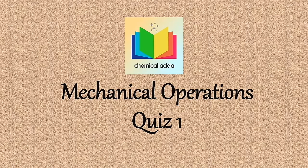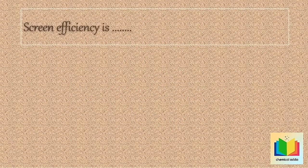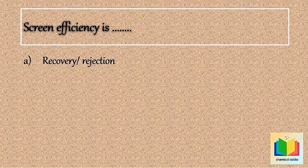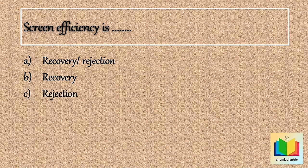First question: Screen efficiency is — Option A: Recovery or Rejection. Option B: Recovery. Option C: Rejection. Option D: None of these.